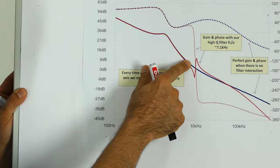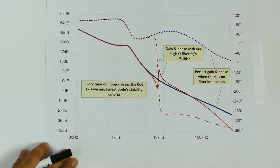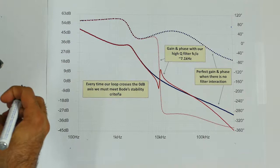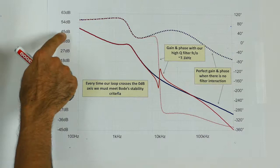Then the red trace is a filter that I have designed specifically so that at its cutoff frequency where it resonates, the impedance of the filter starts interacting with the impedance of the power supply. And you can clearly see the loop response crosses the 0 dB axis several times and that is a recipe for instability.